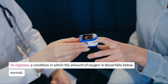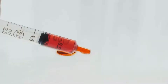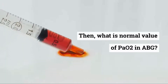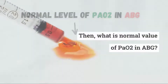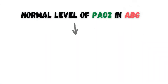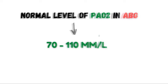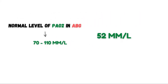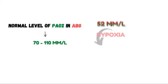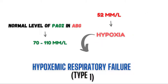Hypoxia is a condition in which the amount of oxygen in the blood falls below normal. In arterial blood gas, the normal level of PaO2 is between 70 to 110 on room air, or without any oxygen support. In this case it's 52, so it's hypoxia. This kind of respiratory failure is called hypoxic respiratory failure, or Type 1 respiratory failure.